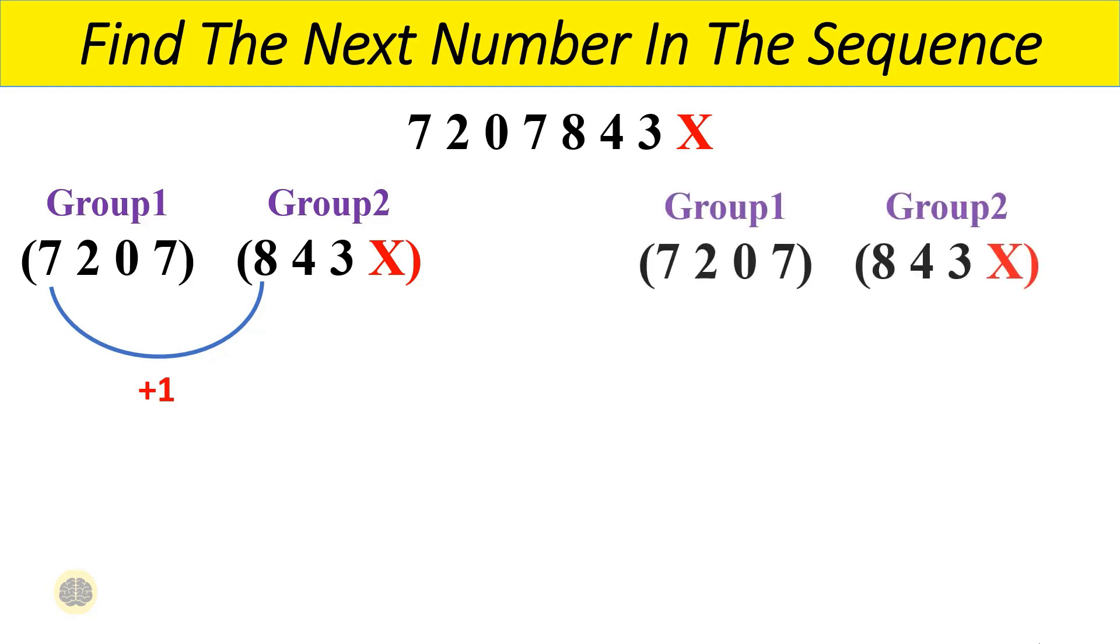Similarly, consider the second digit of the first group. After adding 2 to it, which will result in 4, which is the second digit in the second group. Here, the second digit of the first group is 2, after adding 2 to it the result will be 4, which is the second digit in the second group.